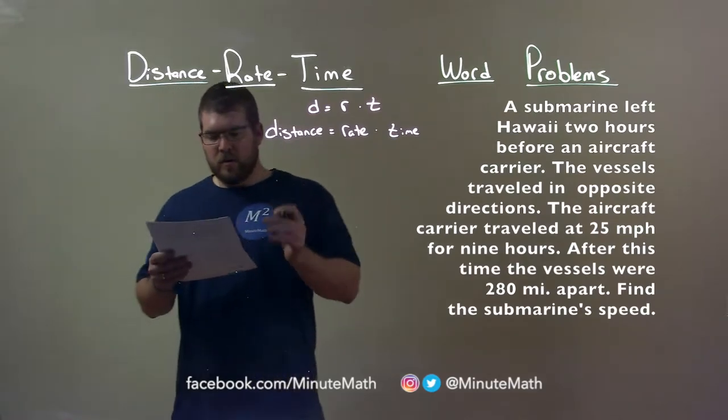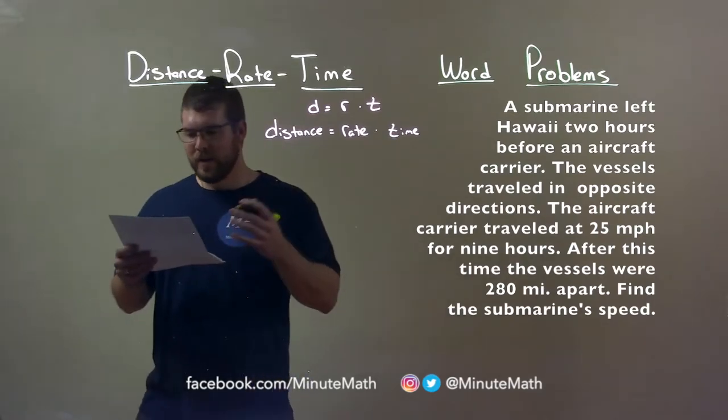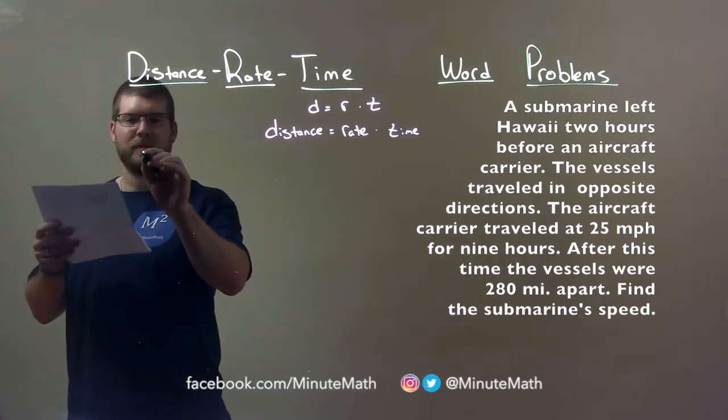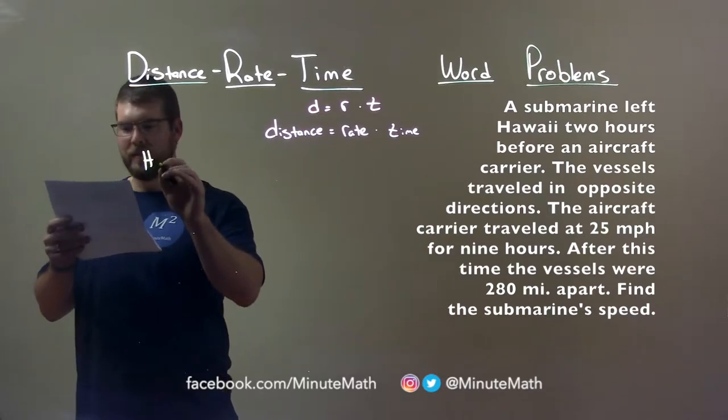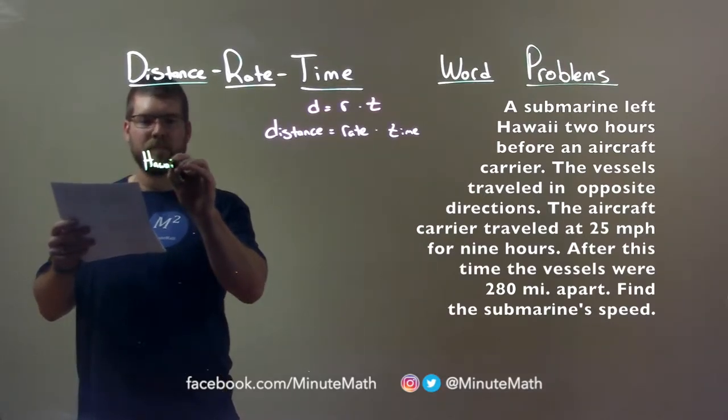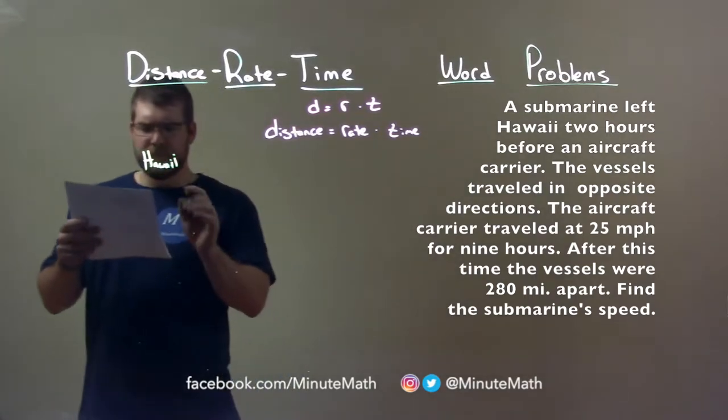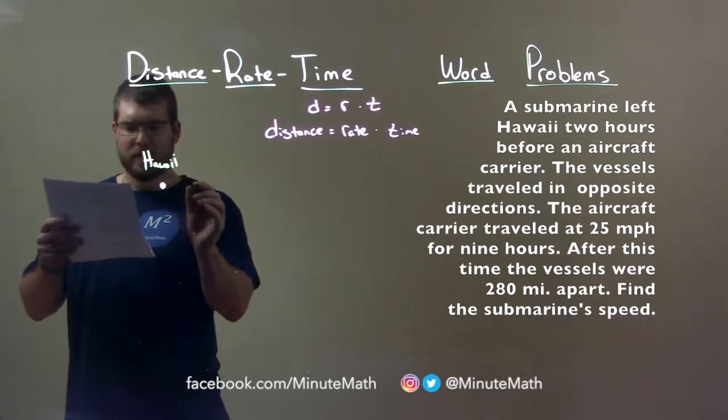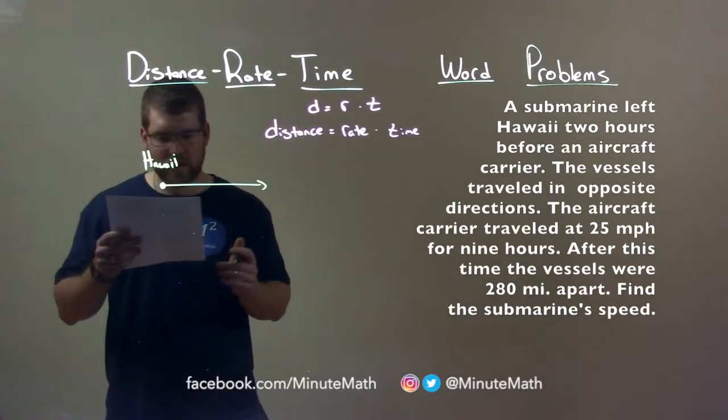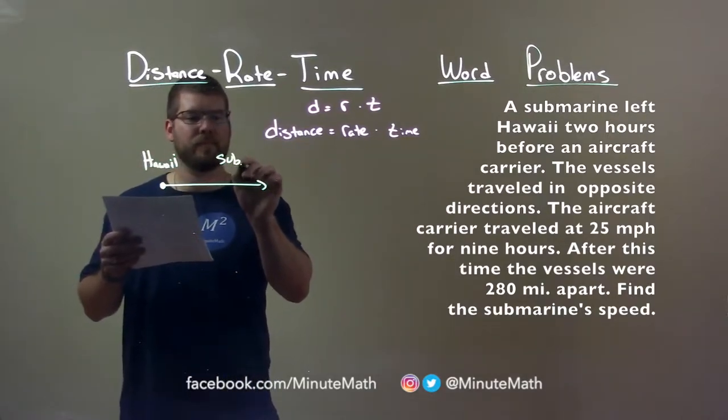So I like to draw a picture. We have Hawaii right here. Hawaii. That's a big I. There we go. Second big I. All right. We have a submarine. So we have Hawaii right here. The submarine traveled in one direction. This is a sub.